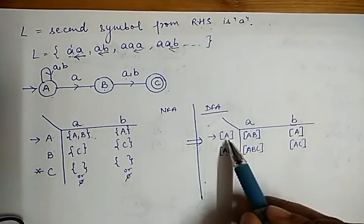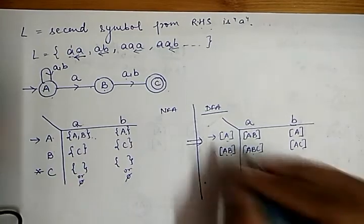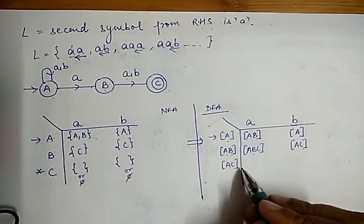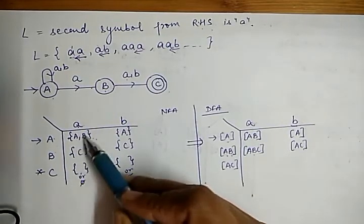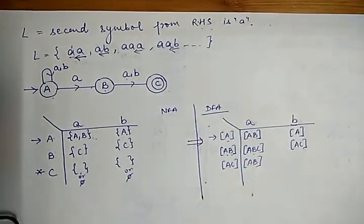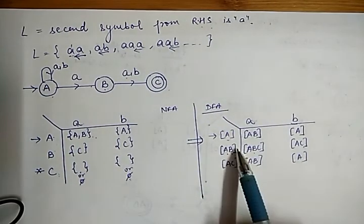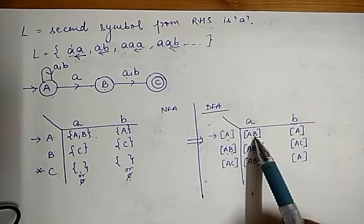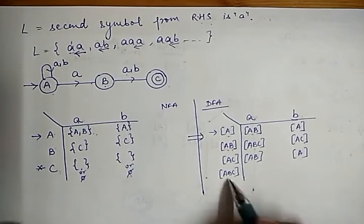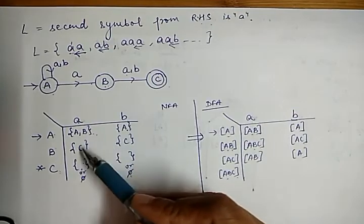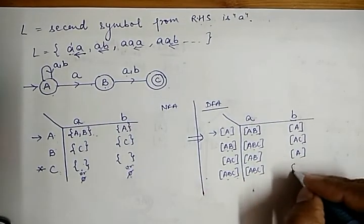From AB we can reach ABC and AC. Taking AC first: for AC with input 'a', we take the union of A and C — that is {A,B} ∪ φ = AB. For AC with input 'b', the union of A and φ gives A. Next we take state ABC. For ABC with input 'a', we take the union of all three states — it gives ABC. For ABC with input 'b', the union gives AC. There are no further new reachable states.